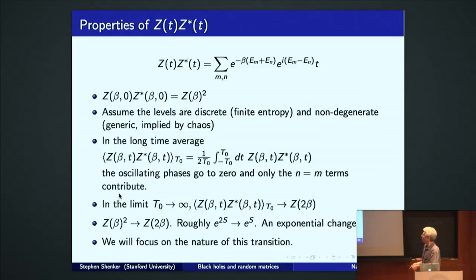So as you go from a short time interval, where you have z of beta squared, at long time, you have z of two beta. Now partition functions are generically e to the entropy. So at short times, you have e to the two s, at long times it's e to the s, just a factor of two.